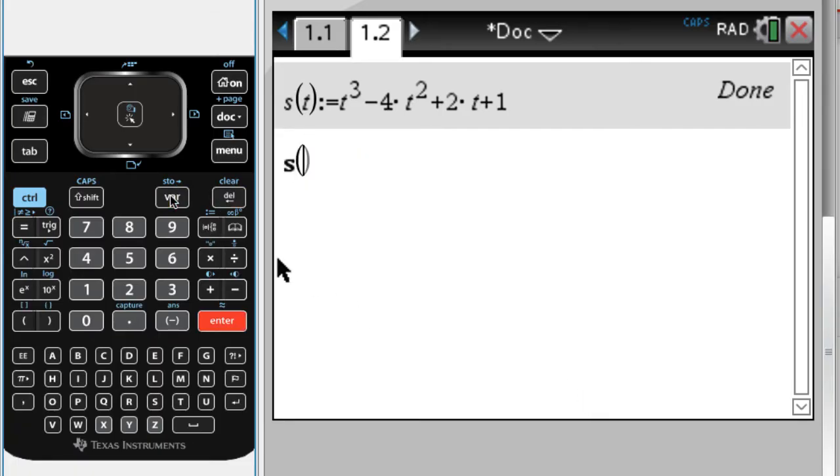It fills in the parentheses. S is not really hard to type, but minus s of 0. I'm going to press enter. That's the displacement, 35 units to the right of where you started, or you could be 35 units above where you started. But the displacement is positive 35.